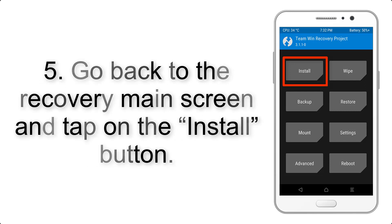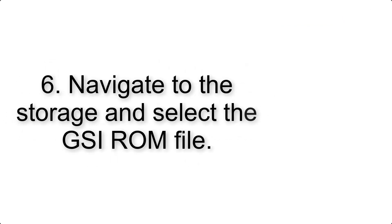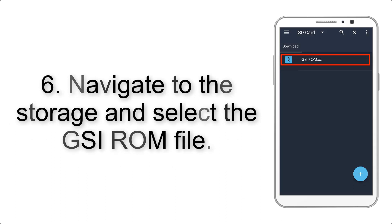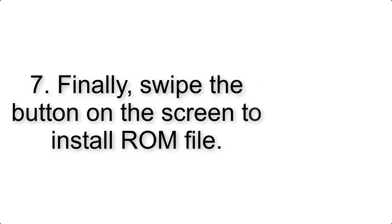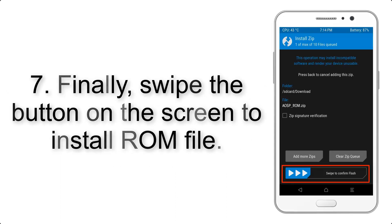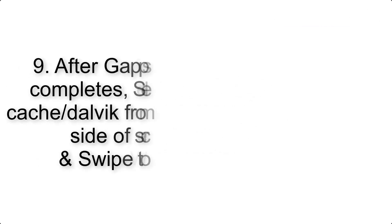Step 5: Go back to the recovery main screen and tap on the Install button. Step 6: Navigate to the storage and select the GSI ROM file. Step 7: Finally, swipe the button on the screen to install the ROM file.